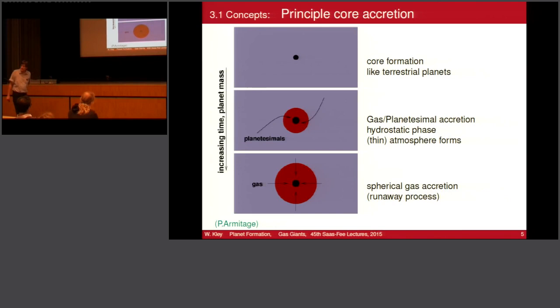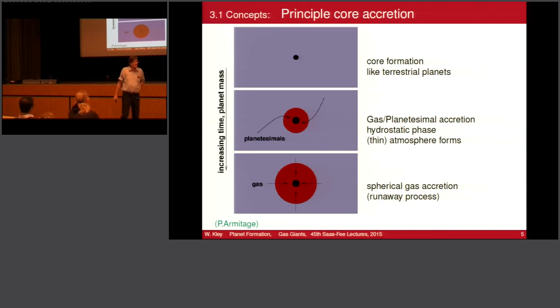That is why it is sometimes called the core instability model, but it's basically an instability of the envelope. It should be called the envelope instability model, because the envelope contracts very rapidly onto the core. This is a runaway process. The question is then how long do these different phases take, and this is one of the major problems still in giant planet formation. The core phase can take quite long — perhaps 100 million years — which would be too long, because there would be no gas left for the gas accretion phase. So we need other mechanisms to speed it up.